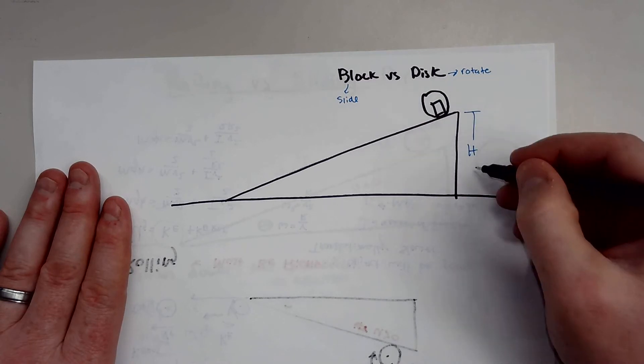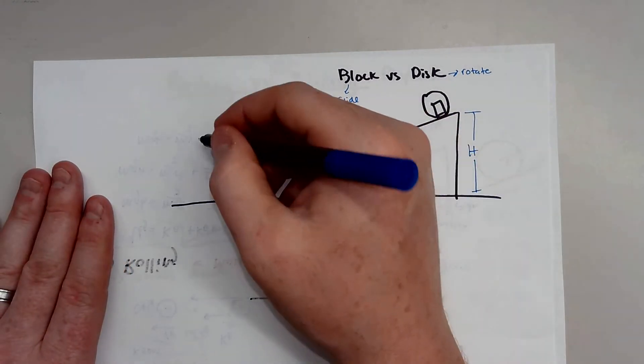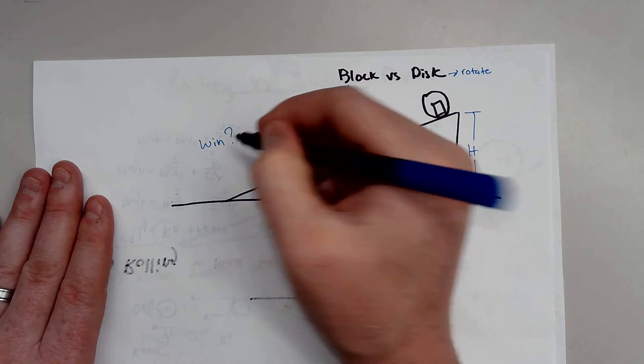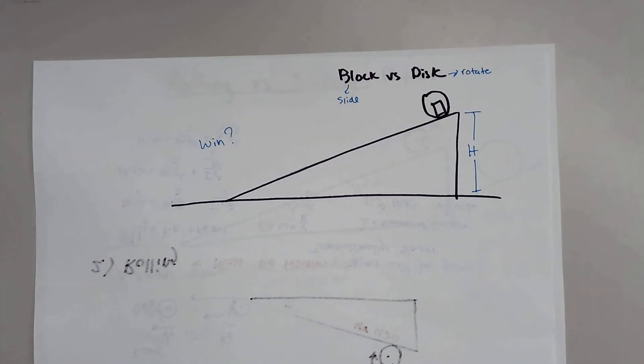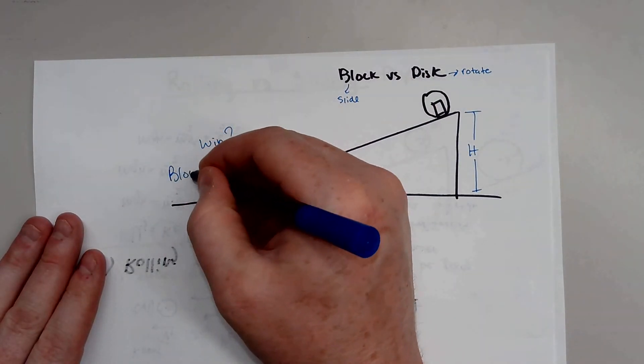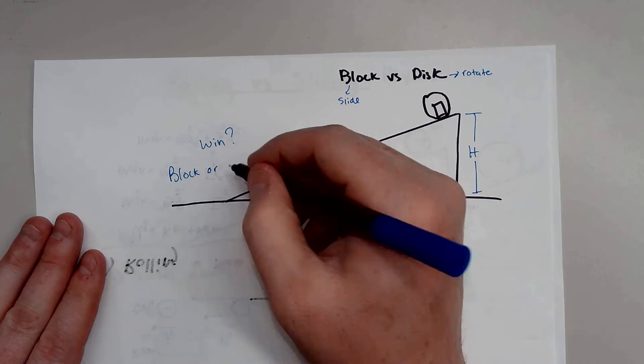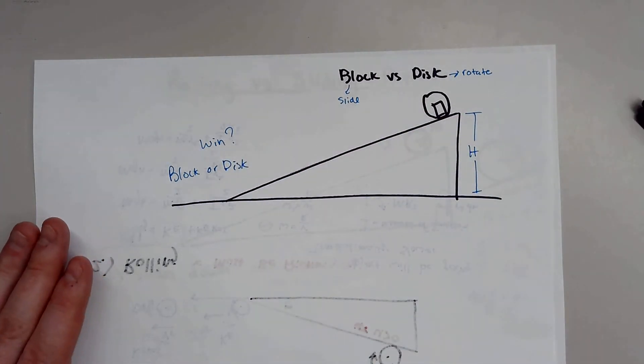They'll go, okay. And they'll say, which one will win the race? So which one will win, the block or the disk? And a lot of physics students will look at this. And they have been thinking, okay, well, if the block and the disk, they have the same mass.